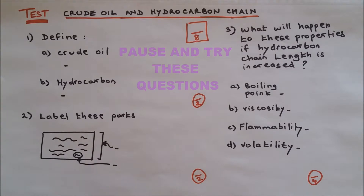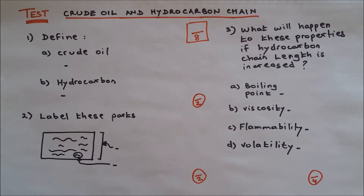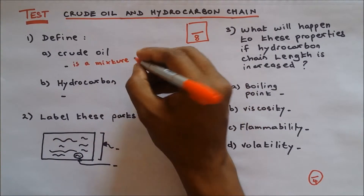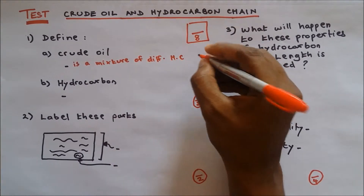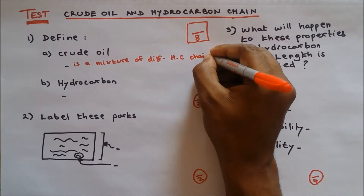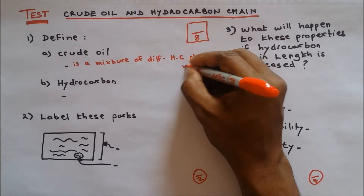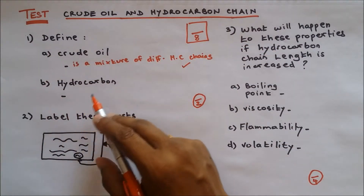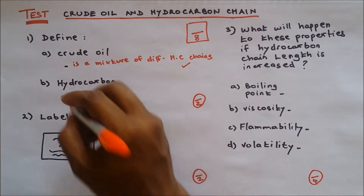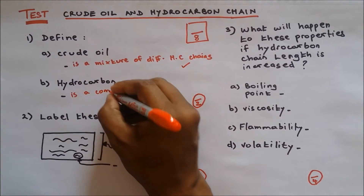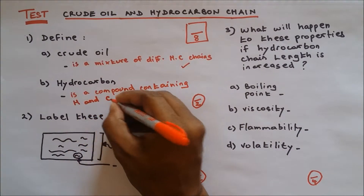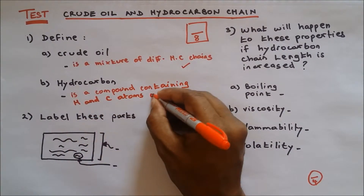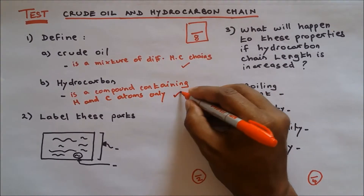Question number one: define crude oil. Crude oil is a mixture of different hydrocarbon chains. Part B: define hydrocarbon. Hydrocarbon is a compound containing hydrogen and carbon atoms only. Two marks, two out of two.